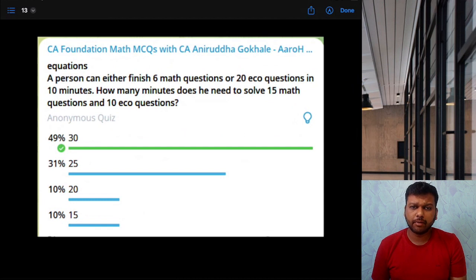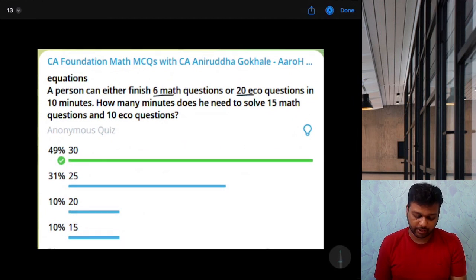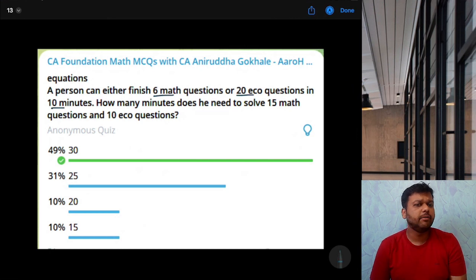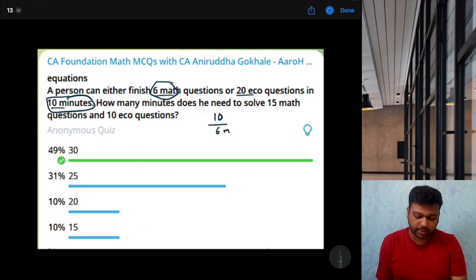A person can either finish 6 math questions or 20 eco questions in 10 minutes. How many minutes does he need to solve 15 math questions and 10 eco questions? So he can solve either 6 math questions in 10 minutes. So he needs 10 minutes for 6 math questions. So how many minutes does he need per question? 10 by 6.